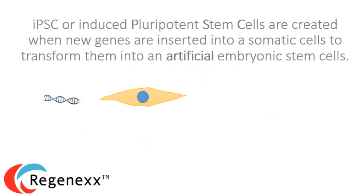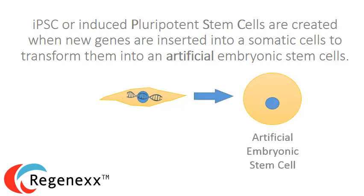IPSC, or induced pluripotent stem cells, are created when new genes are inserted into a somatic cell to transform it into an artificial embryonic stem cell.